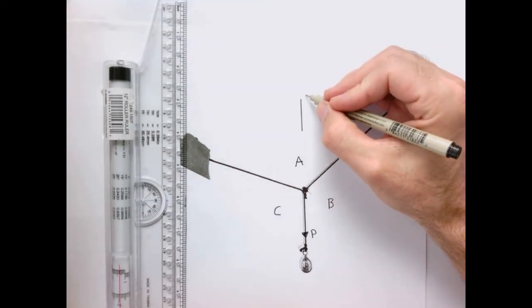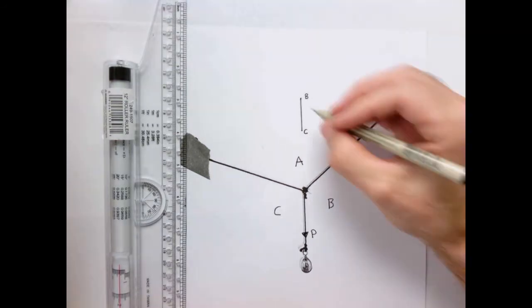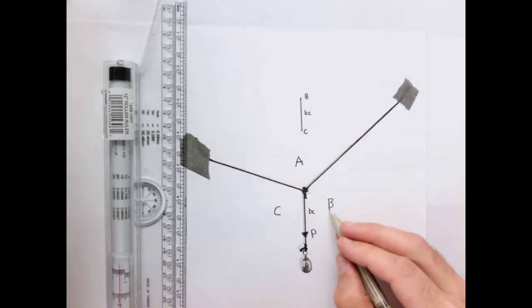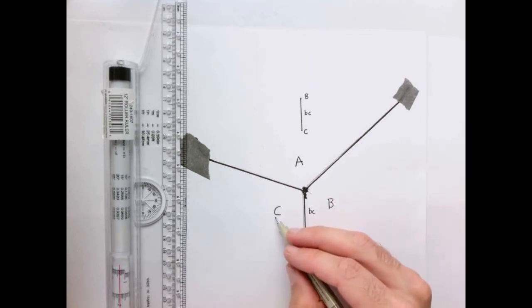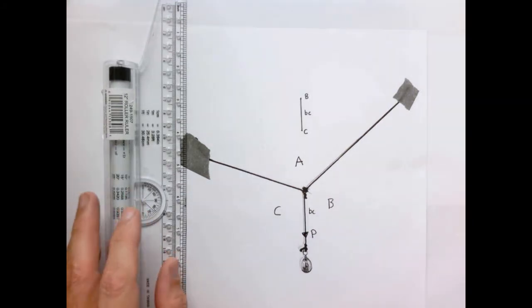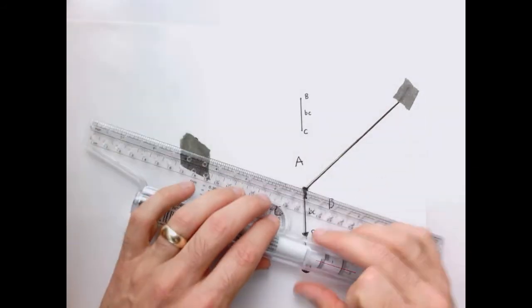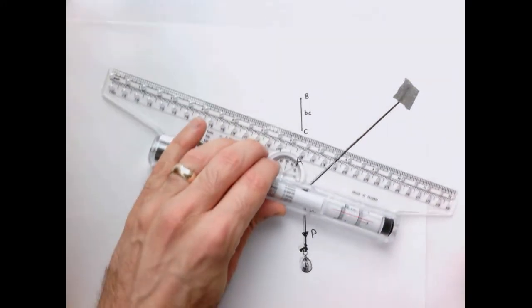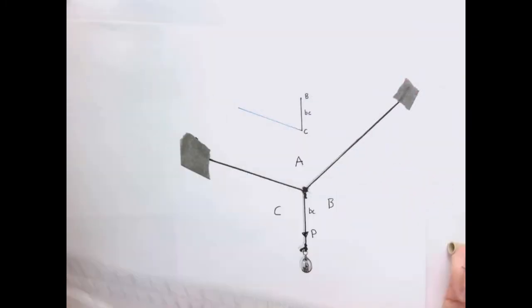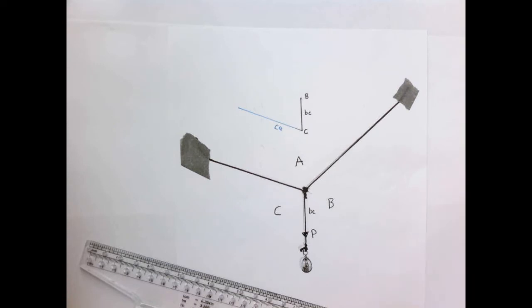I'm going to label that point B, that point C, and this line in lowercase I'm going to call BC, because it's the force between regions B and C. Now I'm going to draw lines for these other two, using different colors to keep the notation. So let's use blue here. I'm going to take the line between C and A, slide up here to point C, and just draw it — not worrying too much about where it ends. So this is going to be line CA.